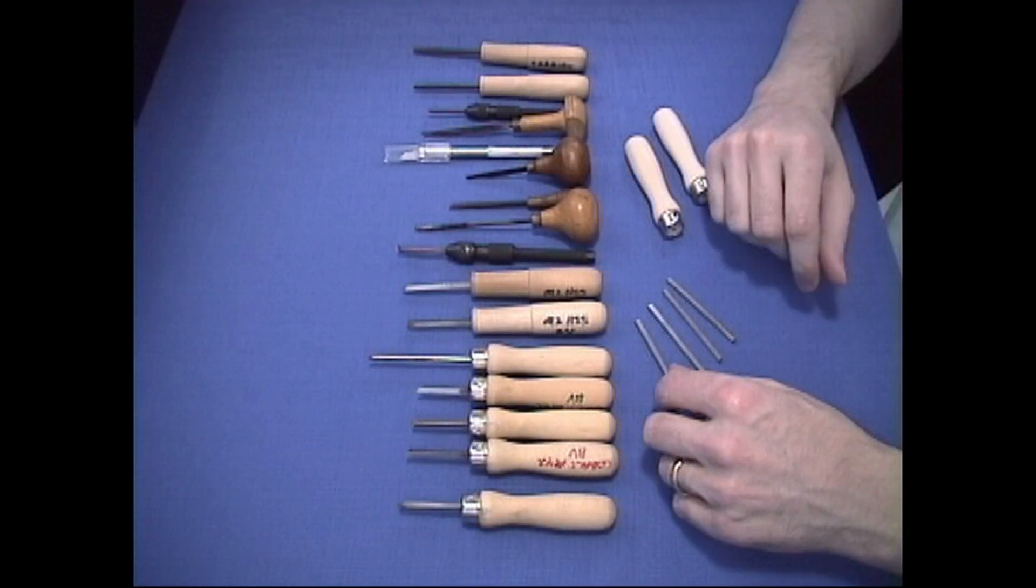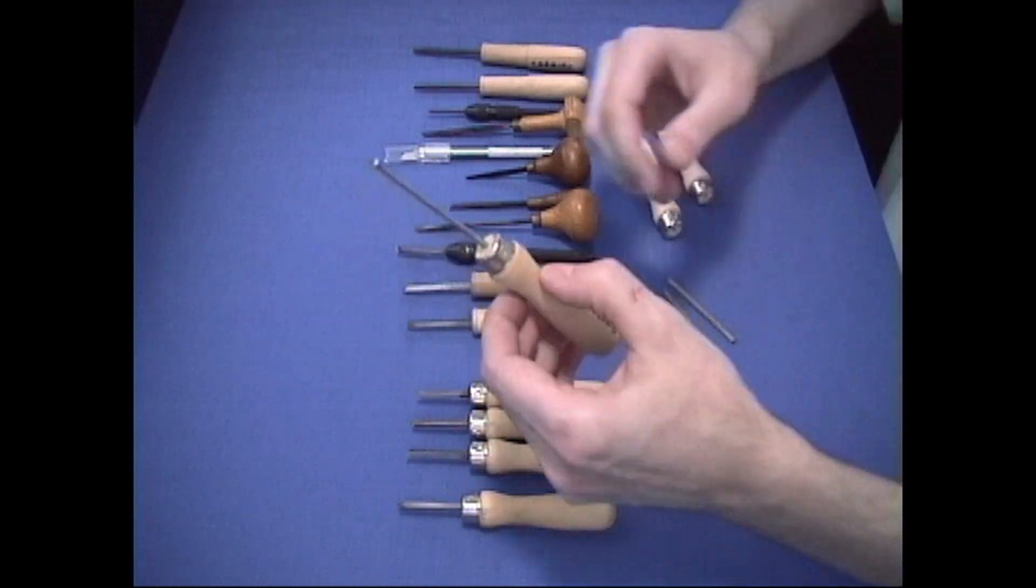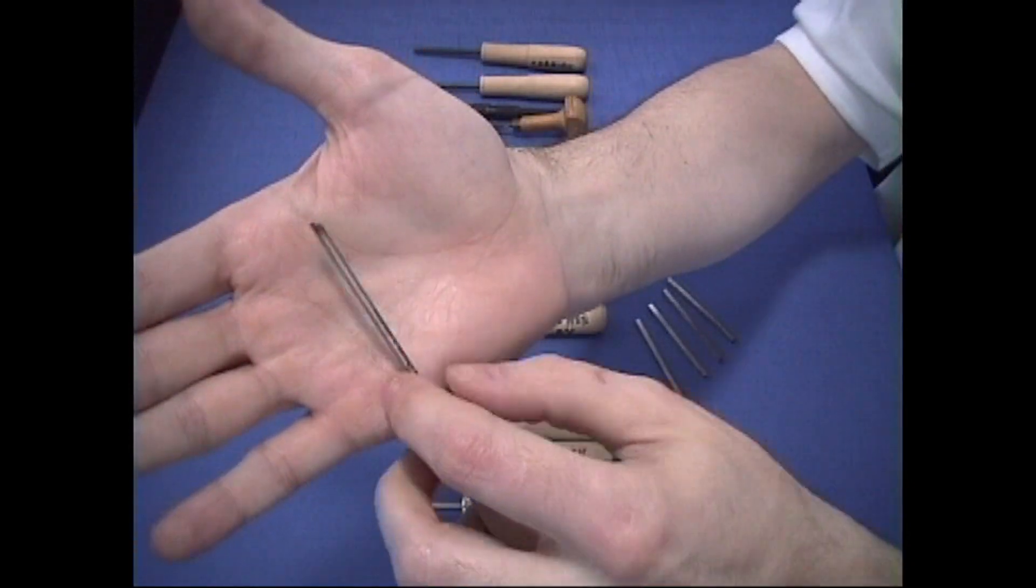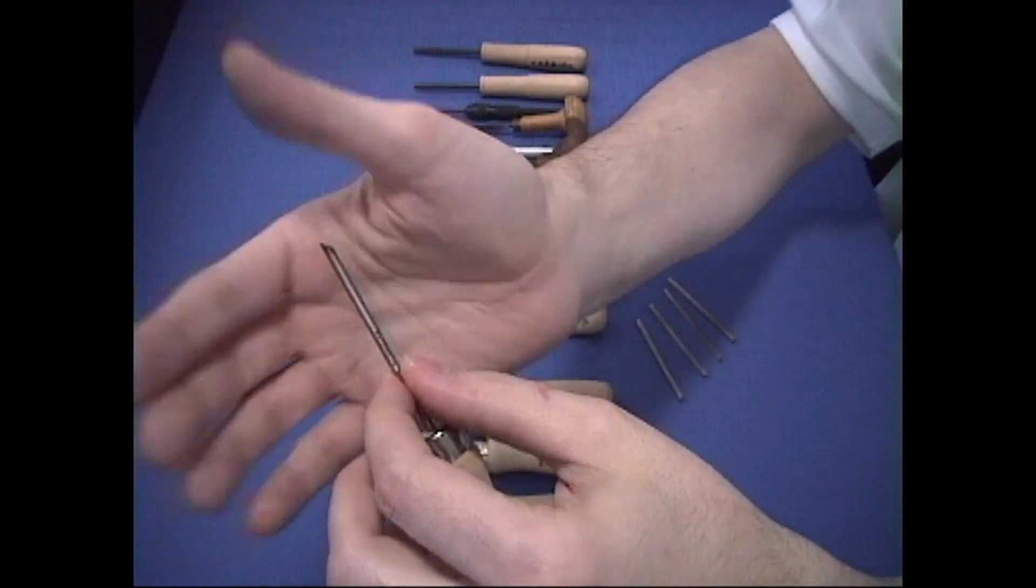Now we have different types of gravers like this one here. This is a round graver and if you look here, it's round. It's not square like the other ones.